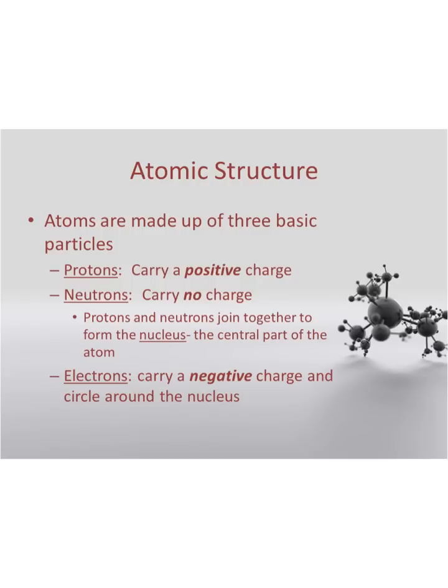Atoms are actually made up of even smaller substances, but it's just really hard for us to separate the atom into those smaller substances. Protons and neutrons join together in the central part of the atom called the nucleus. Protons are positive — a way to remember that is the root word 'pro' means positive. Neutrons carry no charge; a way to remember that is neutrons are neutral. If you are neutral to something, you don't really have an opinion about it — you don't sway one way or another.